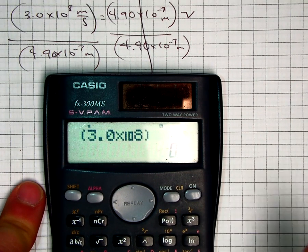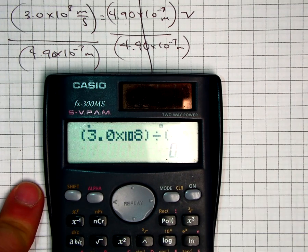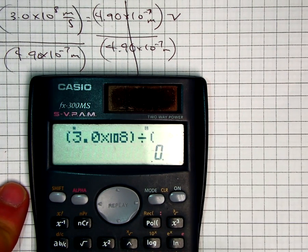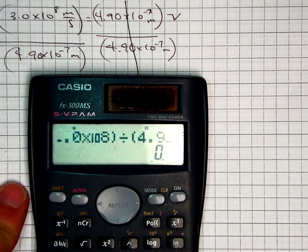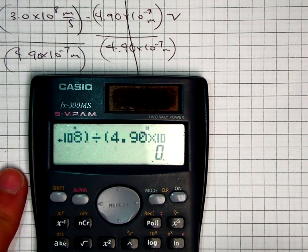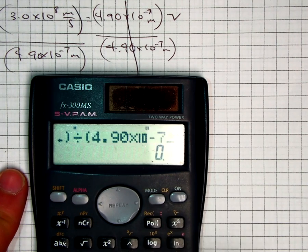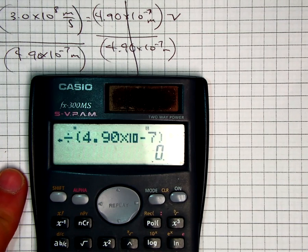I'm going to close parentheses, then I'm going to hit divide, and I'm going to put one more parentheses, and then I'm going to put the bottom number in it. 4.90 times shift, 10 to the X, negative 7, close parentheses, enter.